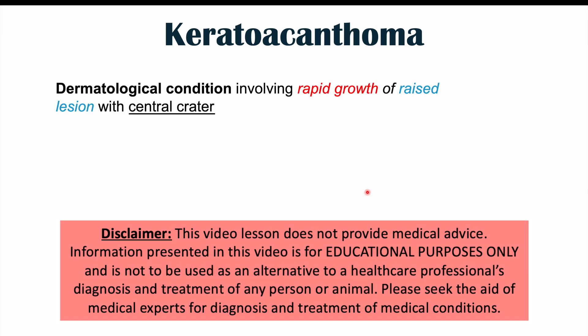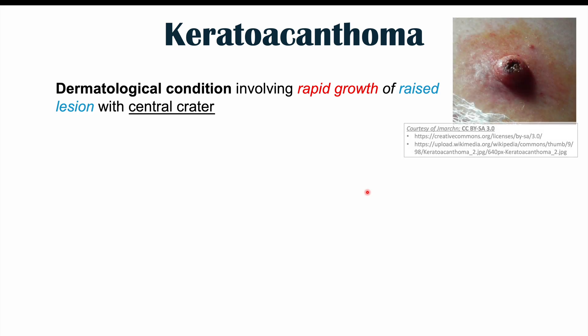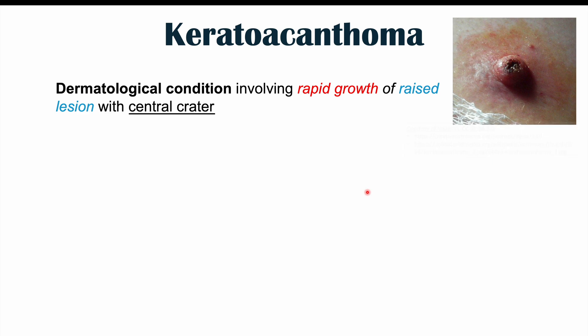This lesson is on a dermatological condition known as keratoacanthoma, which involves a rapid growth of a raised skin lesion with a central crater. We'll talk about this in more detail when we discuss some of the risk factors, the key characteristics of the lesion, some of the stages of this condition, and also how to diagnose it and how to treat it.